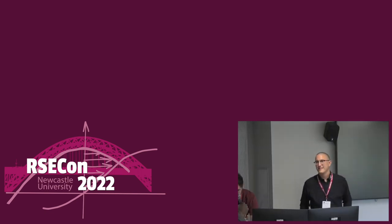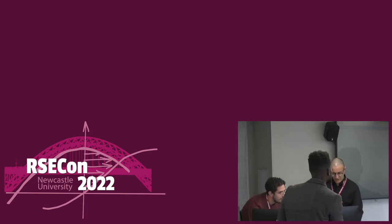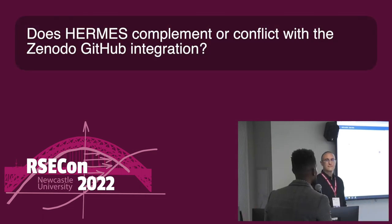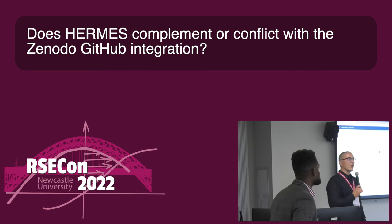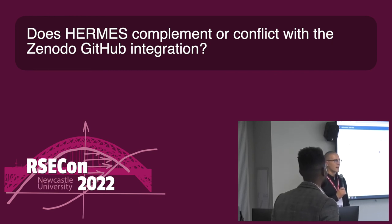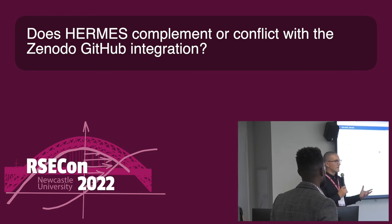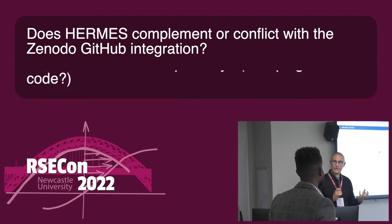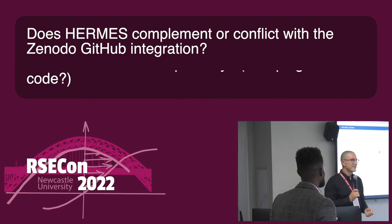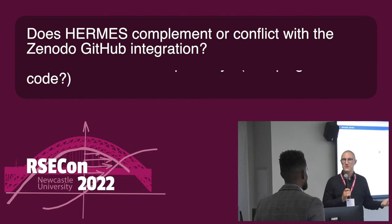Question: Does Hermes complement or conflict with the Zenodo–GitHub integration? It's a different philosophy. The GitHub–Zenodo integration pulls stuff from the repository, and one of the issues with that pull workflow is you have no control over the metadata. What we're trying to do follows a push philosophy — you compile the metadata, get it ready for publication, and push it to the repository. So it's a bit of a conflict: you wouldn't want to use both at the same time. We think push is much better than pull because it gives you more control.